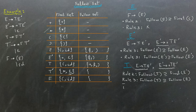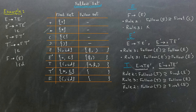Next, we consider the second production where E-bar produces plus T E-bar. We first apply rule 2 — the follow set of T contains the first set of E-bar. This does not fetch us any new terminals. As the first set of E-bar has the empty string, we have to apply rule 3, adding the follow set of E-bar to the follow set of T. This also does not fetch us any new terminals. With this, we have fully determined the follow set of T.